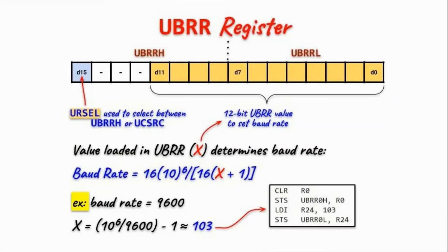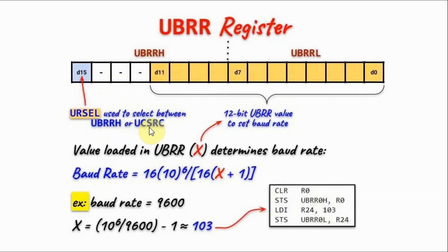The baud rate register is made of two 8-bit registers: the low register and the high register. The first 12 bits are used to set the baud rate. The remaining three bits are unused, while one bit selects between the baud rate high register and control and status register C — but on the ATmega328 this bit is not defined, so we set it to zero.